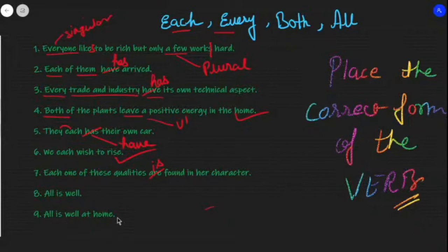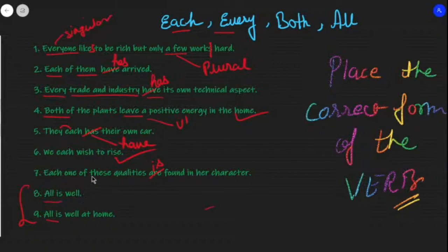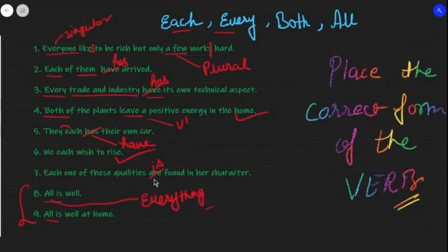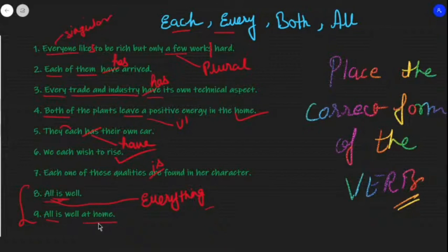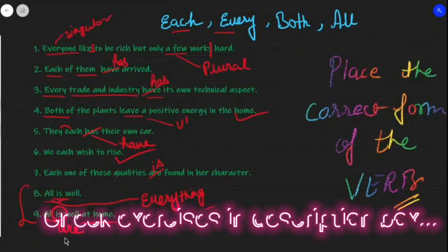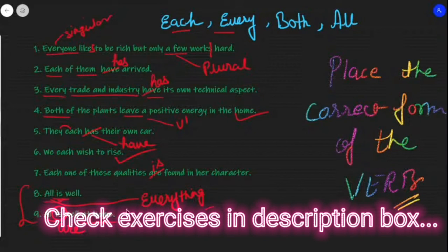'All is well' versus 'All are well at home.' Keep in mind the sense in which 'all' is used. If 'all' is used in an abstract or general sense — meaning 'everything' — we place a singular verb: 'All is well.' But 'All are well at home' refers to the members of the home, so we use the plural verb 'are.'